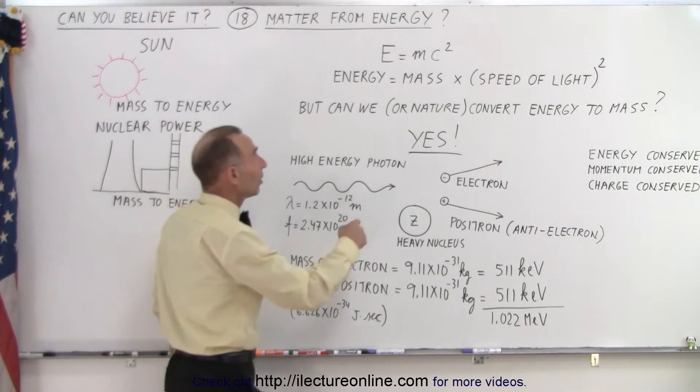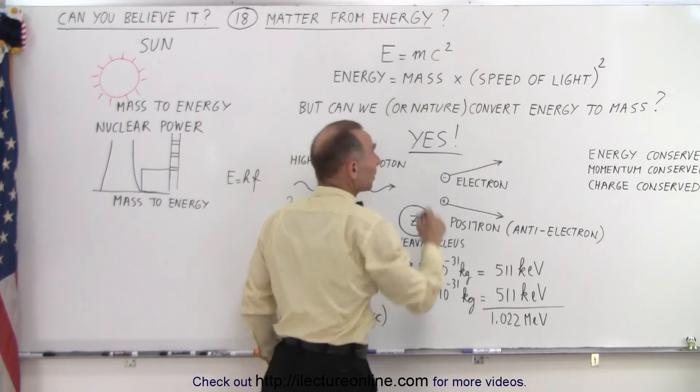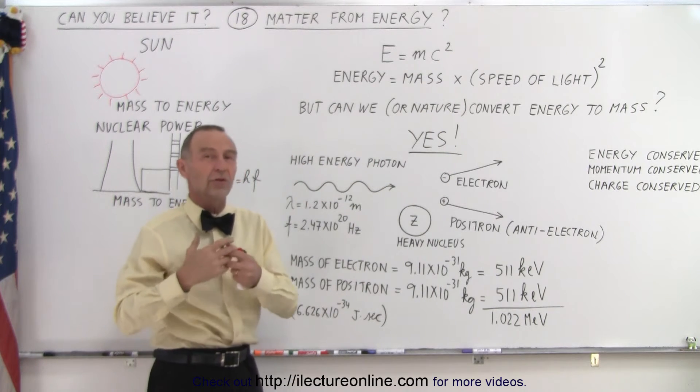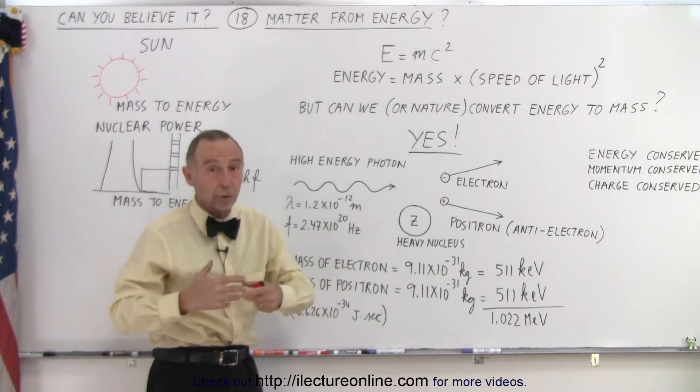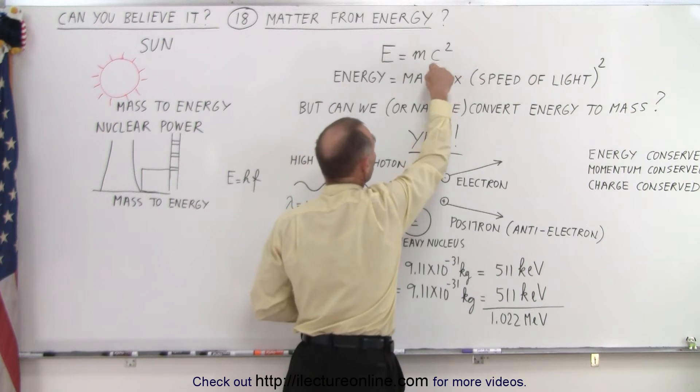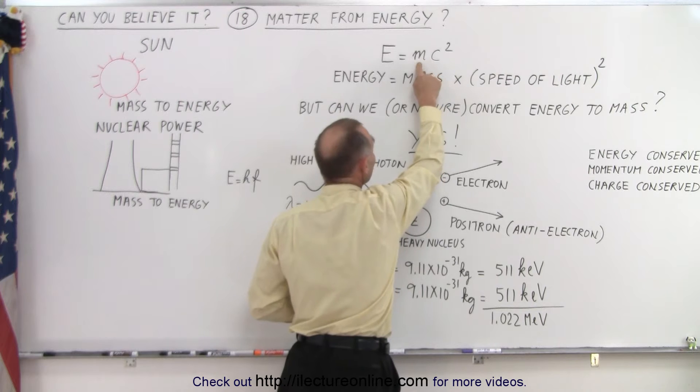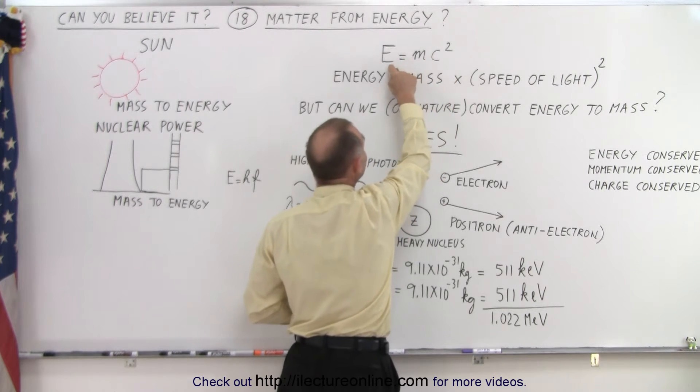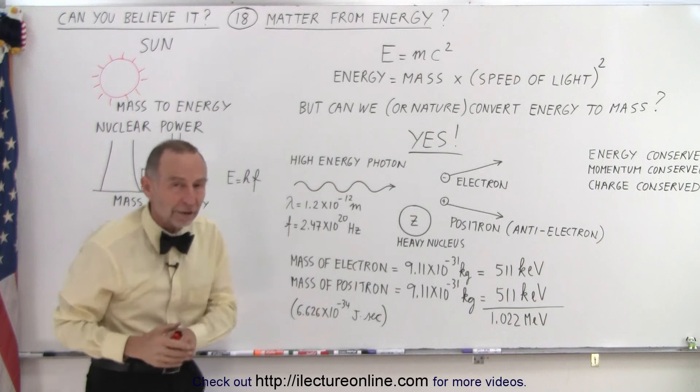The reason is C squared. C is the speed of light, which is 300,000 kilometers per second, or 300 million meters per second, and when we square that, that's an enormous number, so a tiny amount of mass multiplied times an enormous number can form a considerable amount of energy.